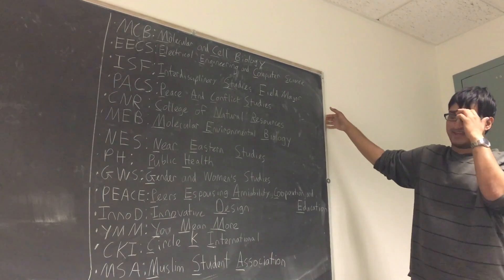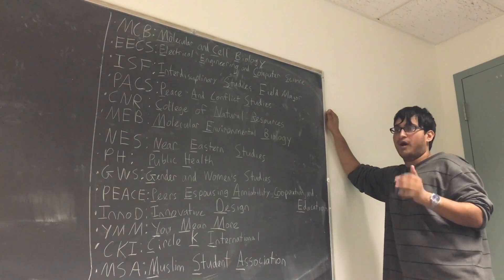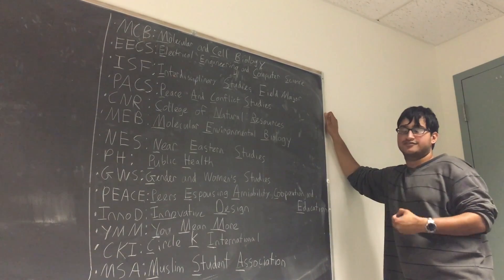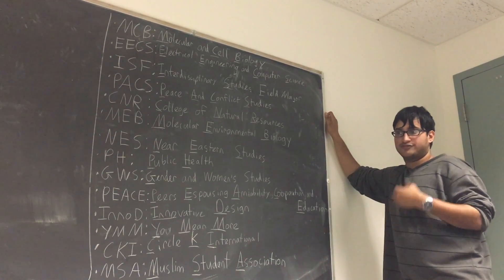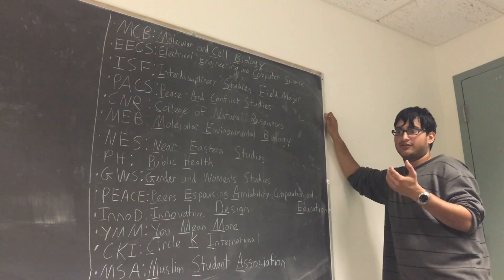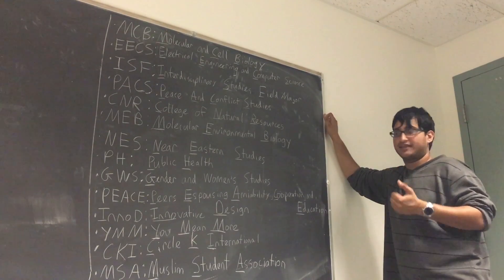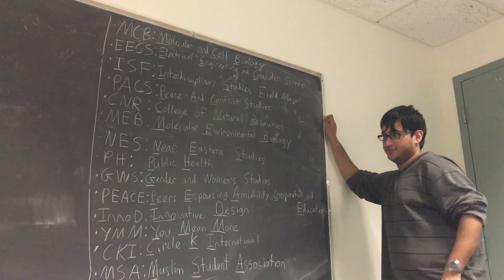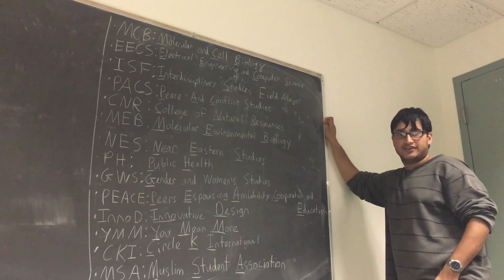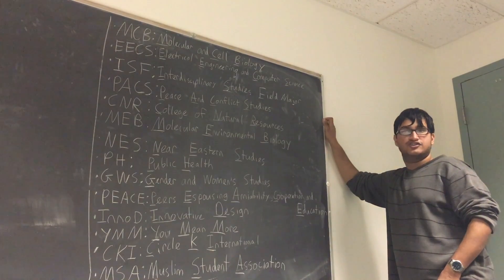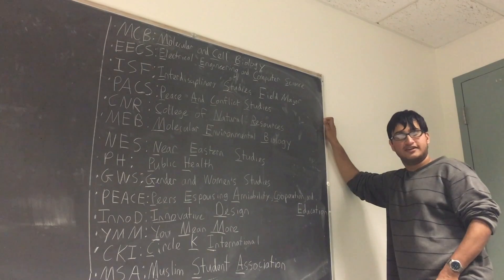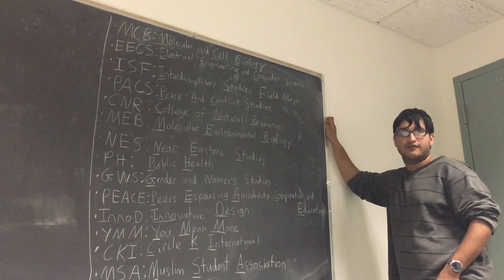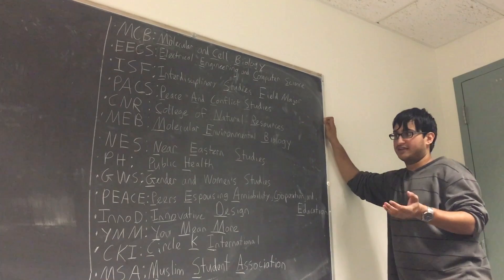PH is Public Health. Public Health looks at health from a population perspective, understanding the determinants and distributions of health, social factors affecting health, health policy, and things like that. GWS is Gender and Women Studies, analyzing gender in society and inequalities relating to gender from a very intersectional approach.